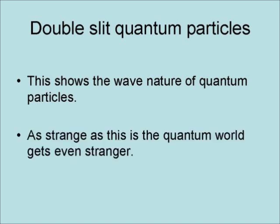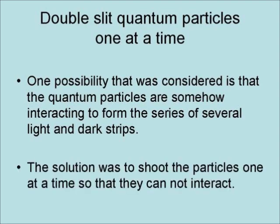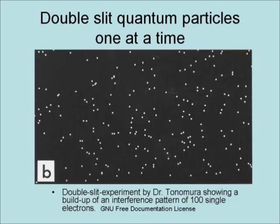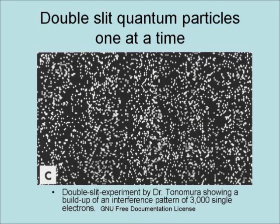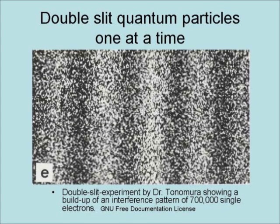As strange as this is, the quantum world gets even stranger. One possibility to consider is that the quantum particles are somehow interacting with each other to form a series of several light and dark strips. The solution was to shoot the particles one at a time so that they cannot interact. Here are the results of a double-slit experiment showing the buildup of an interference pattern of 100, then 3,000, then 20,000, and then 700,000 individual electrons.